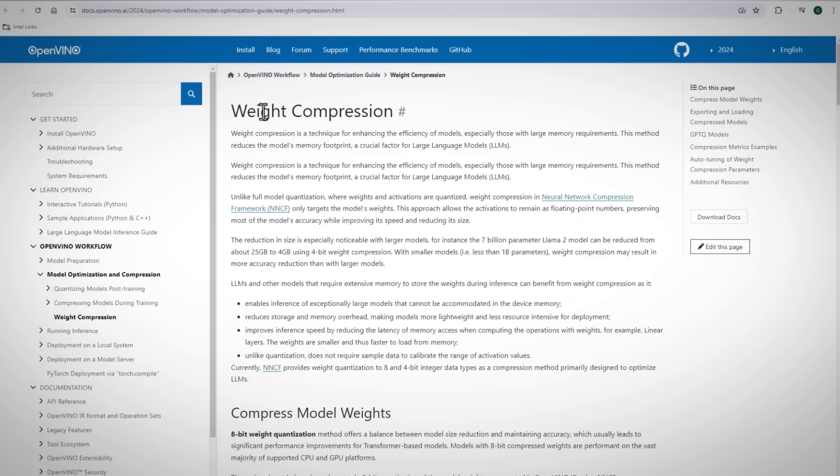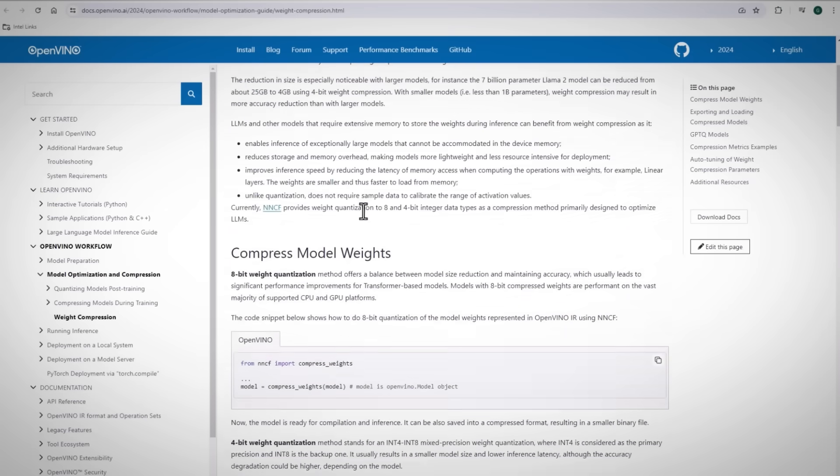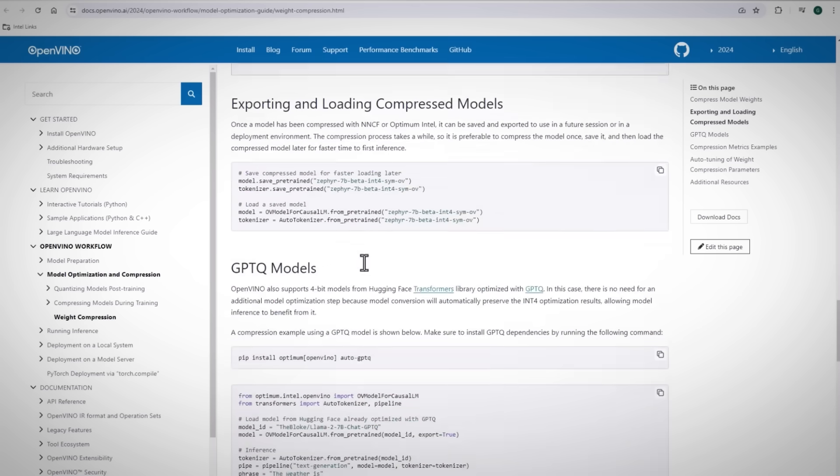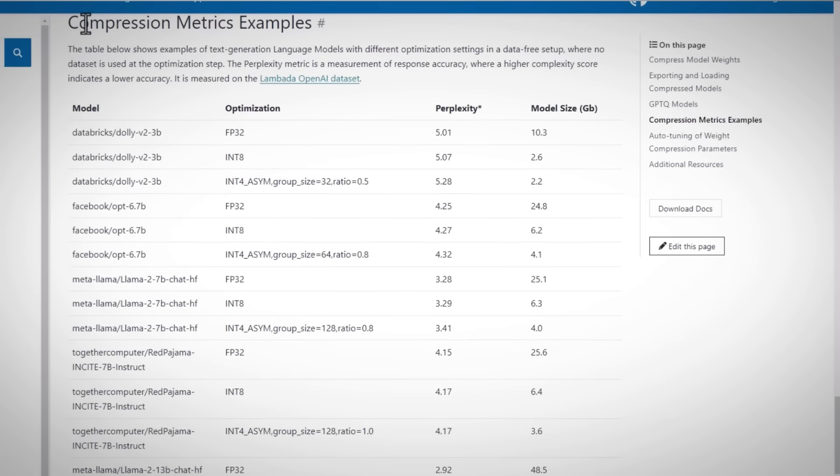If you navigate to the OpenVINO weight compression page, link below, you can find here all the information you'll need and few examples to get a good feeling about the compression ratio.